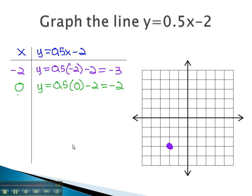This means when x is 0, y is -2. Graphing this on the coordinate plane, 0 for x, negative 2 for y, we get our next point.